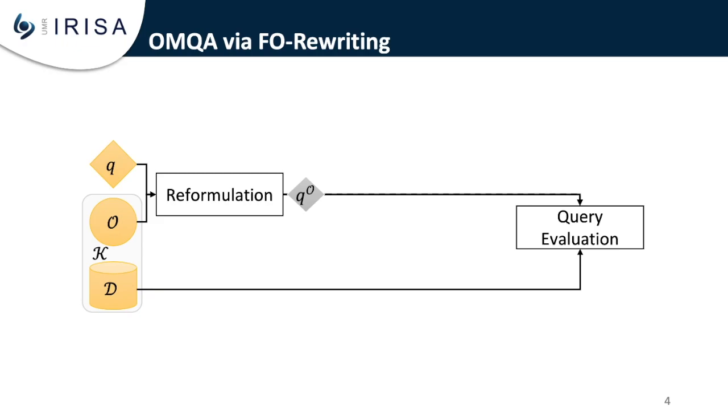We specifically focus on OMQA performed via FO Rewriting. It has been widely investigated in the literature and can be described by the following figure. Given a query Q asked on a knowledge base K, which is made of an ontology O and a database D, FO Rewriting is performed by rewriting Q into a query formulation QO using O. QO therefore compiles all of the relevant domain knowledge from O and can then be evaluated on the database D to produce the final answer.